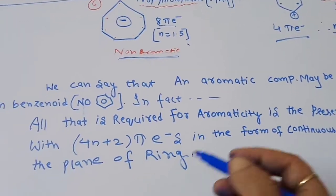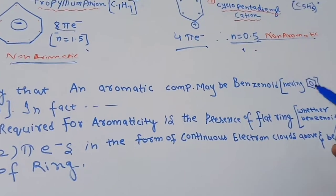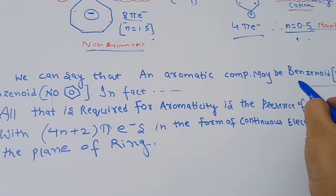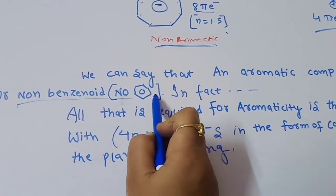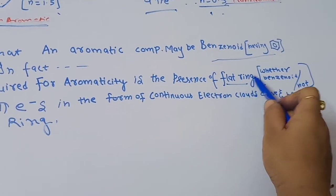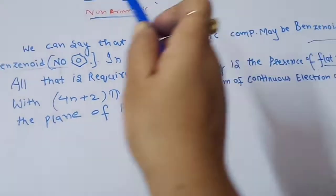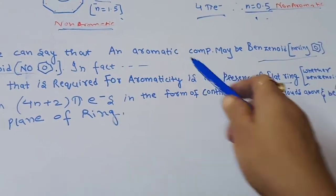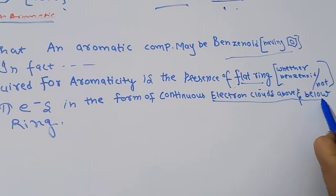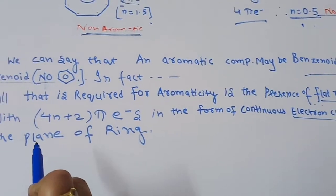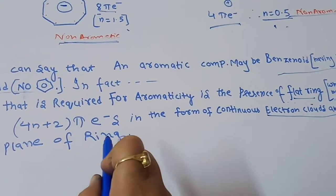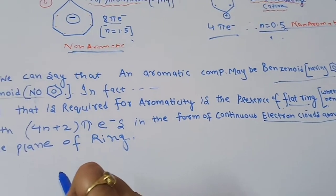To conclude: an aromatic compound may be benzenoid — meaning it has a benzene ring — or non-benzenoid, meaning it does not have a benzene ring. All that is required for aromaticity is the presence of a flat ring, whether benzenoid or not, with 4n+2 pi electrons in the form of a continuous electron cloud above and below the plane of the ring — the donut-shaped pi electron cloud we have already seen. For aromaticity, the must conditions are: a flat ring, obedience to Huckel's rule, and a continuous electron cloud above and below the plane of the ring.